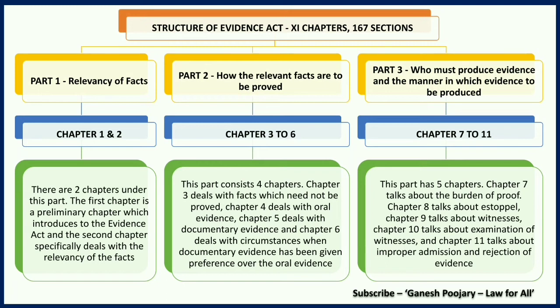In Part 2, we are covering four chapters: chapter 3, 4, 5, and 6. With these four chapters, we are understanding how the relevant facts are to be proved. Chapter 3 deals with facts which need not to be proved. Chapter 4 deals with oral evidence, whereas chapter 5 deals with documentary evidence. And finally, chapter 6 deals with circumstances when documentary evidence has been given preference over the oral evidence.